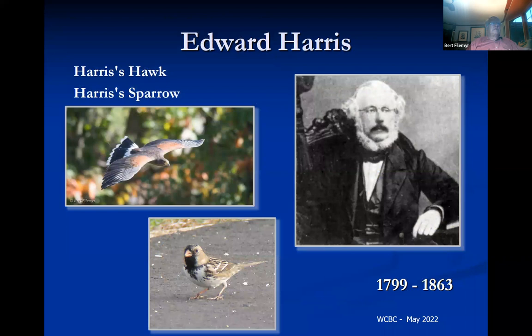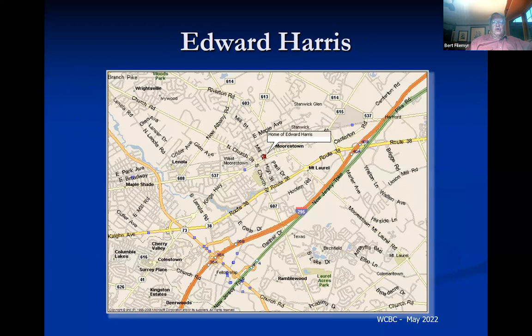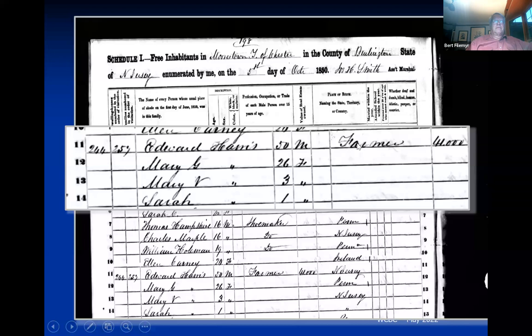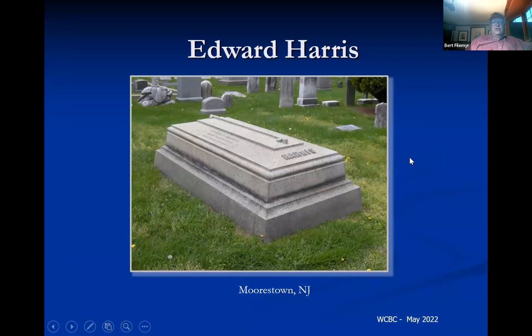Edward Harris — Harris's Hawk and Harris's Sparrow both named by Audubon. His connection to this area: he lived his whole life in the Morristown, New Jersey area, was a farmer who imported and exported clover seeds to Europe, and was quite wealthy. His house is still there and serves as the headquarters of the Morristown Historical Society, restored so visitors can learn about Edward Harris. In the 1850 census he is listed as a farmer, age 50 — he was a great supporter of Audubon.